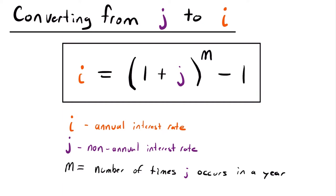Let's look at our first conversion formula — converting from J to I, where J is a non-annual interest rate and I is the annual interest rate. The formula is: I = (1 + J)^M − 1, where M is the number of times that J occurs in a year. For example, if J was a semi-annual rate, which means it occurs twice per year, then M would equal 2. That's essentially how you figure out what M is equal to.